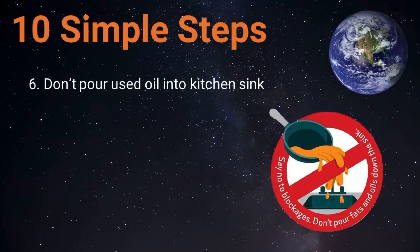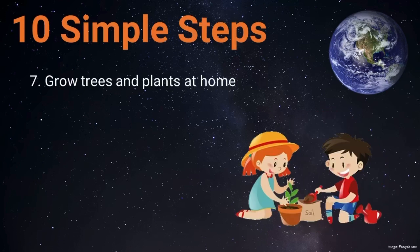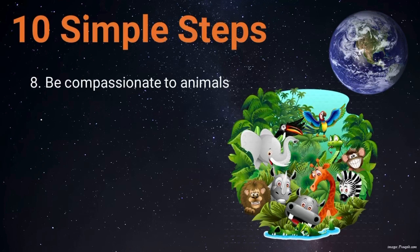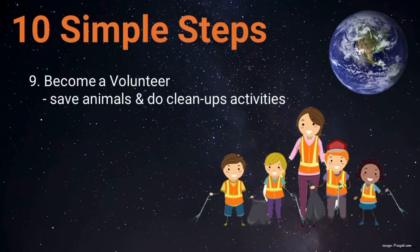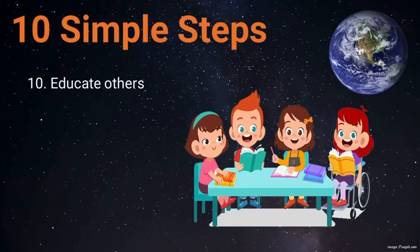Number six: don't pour used oil and other garbage into the kitchen sink. Number seven: grow trees and plants at home to increase oxygen and reduce carbon dioxide. Number eight: be compassionate to animals and protect them from danger. Number nine: become a volunteer and save animals, including street animals, wildlife, and marine life. Number ten: educate others, including your parents, siblings, neighbors, relatives, and friends.